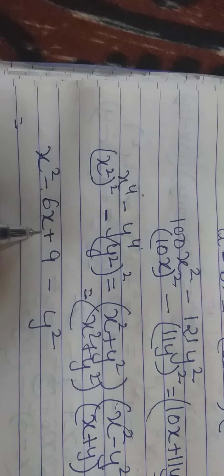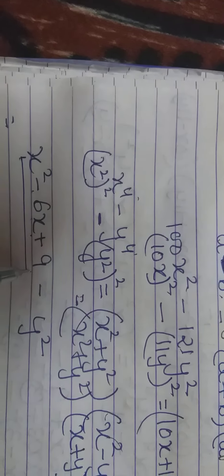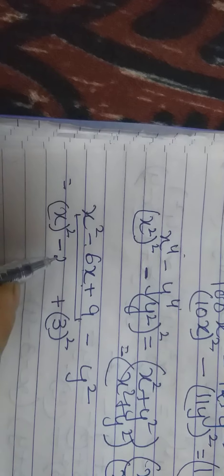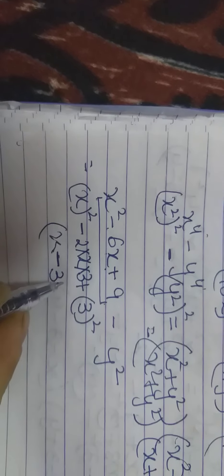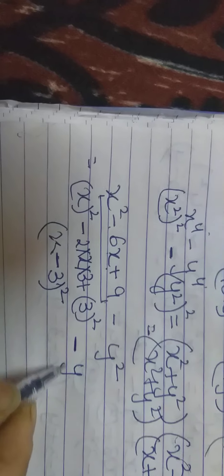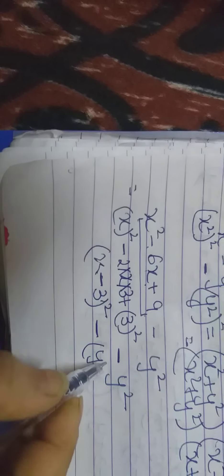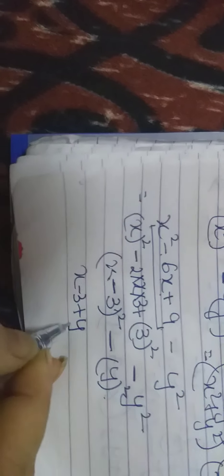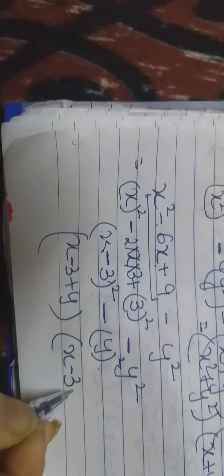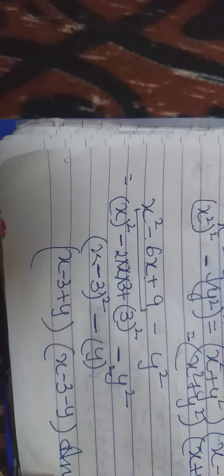Let me take one more example: x² - 6x + 9 is a perfect square trinomial. The first term is a perfect square of x, 9 is a perfect square of 3, and in the middle 2 × x × 3 = 6x. Yes, it matches. So x² - 6x + 9 = (x - 3)². Now if this is subtracted from y², we apply the difference of squares formula. The factors will be (x - 3 + y)(x - 3 - y). This is our answer.